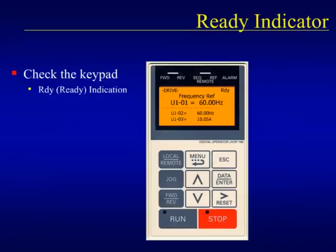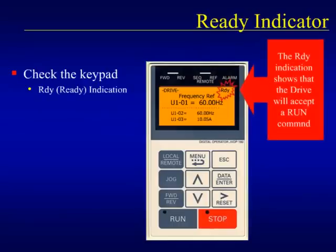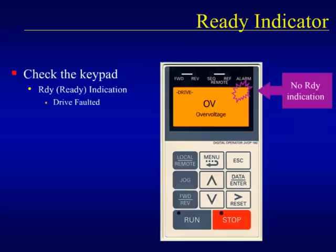Whether the motor won't start or stops unexpectedly, one of the first steps is to see if the AC drive can tell us something about the current situation via the keypad. For all Generation 7 Yaskawa drives, except for the J7 and V7 drives, the drive can only accept a run command if the drive displays a ready indication — abbreviated RDY — in the upper right of the keypad screen. If the drive is faulted, the ready indication will not be shown since no run commands will be executed until the fault situation is cleared manually.